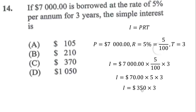Multiplying 350 by 3: 3×0=0, 3×5=15, keep 5 carry 1, 3×3=9 plus 1 gives 10. So we get $1,050. Therefore the correct answer is D.